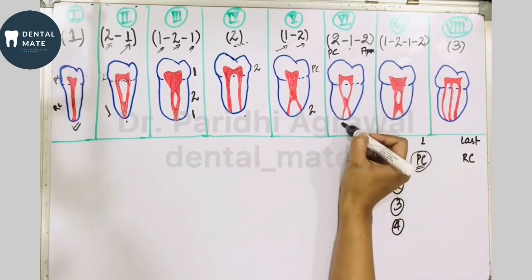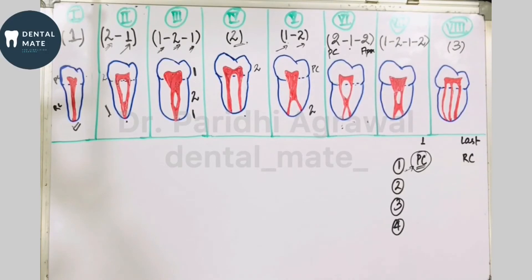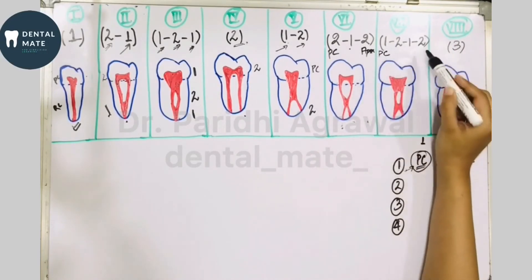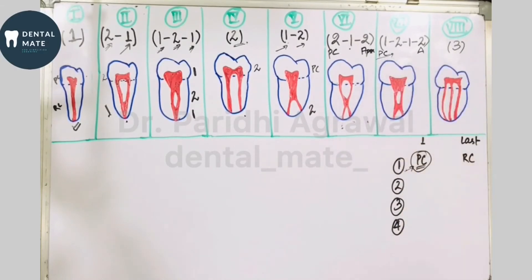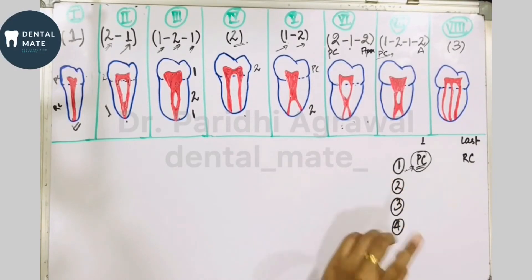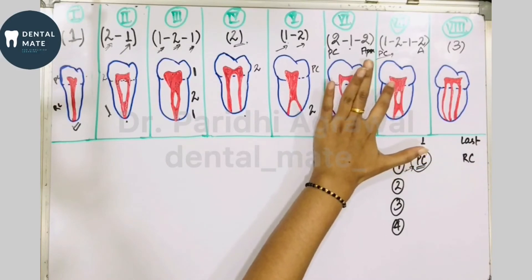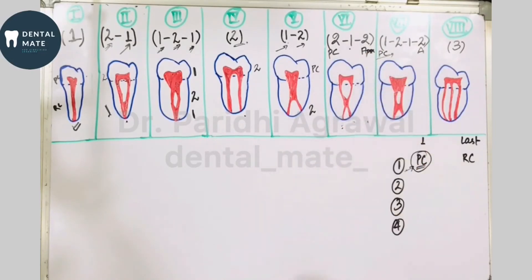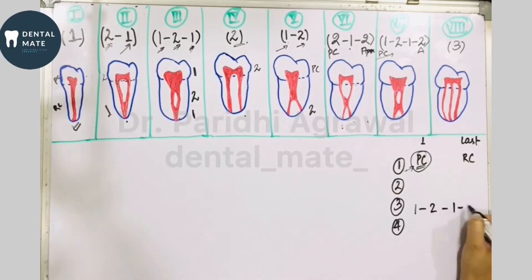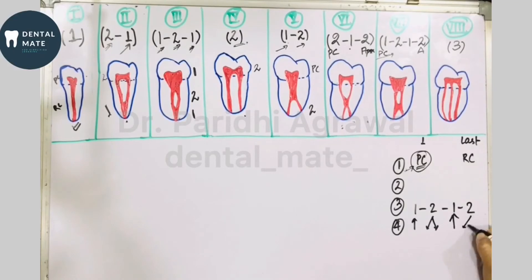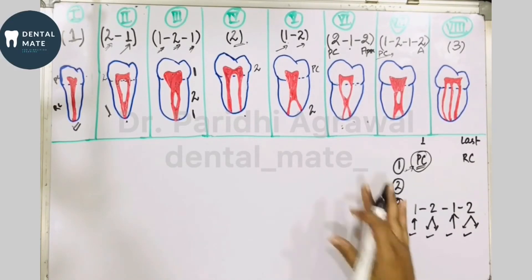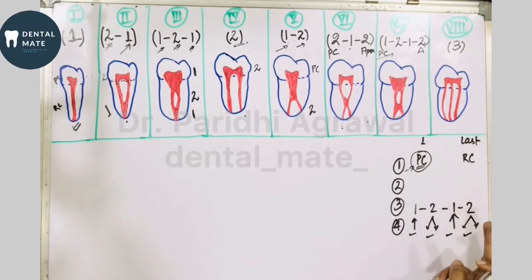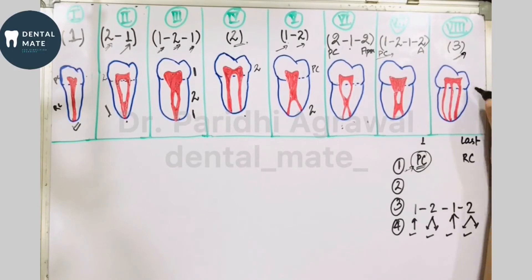In Type 7 (1-2-1-2): one single canal leaves the pulp chamber, divides into 2, rejoins into 1, then re-divides into 2. So the pattern is: single canal — divide — join — re-divide. In Type 8: three different distinct canals originate from the pulp chamber itself, represented simply as 3.